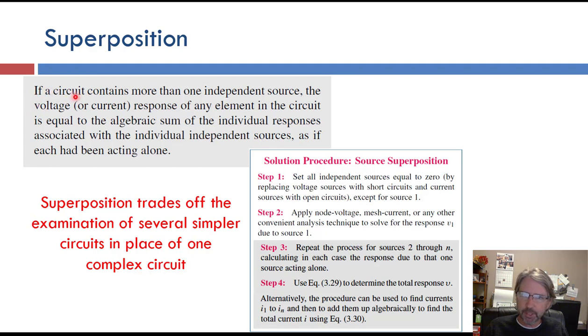So the theorem says if a circuit contains more than one source, so current sources or voltage sources, the things you calculate, either voltages or currents in the circuit, are equal to the sum of the individual responses associated with the individual independent sources as if each had been acting alone. So if you have three voltage sources and two current sources or something like that, you can redraw the circuit with just one source.